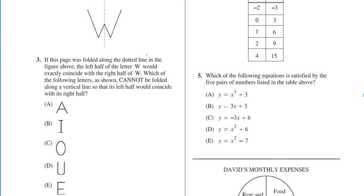If this page was folded along the dotted line in the figure above, the left half of the letter W would exactly coincide with the right half of W. Which of the following letters, as shown, cannot be folded along a vertical line so that its left half would coincide with its right half?